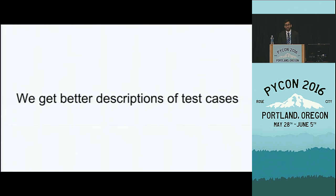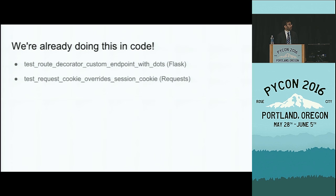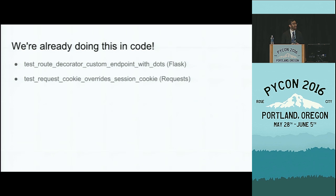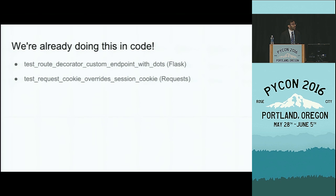Some of the advantages we have here are better descriptions of our test cases. This is something we already do — I pulled examples from Flask and the requests library — where when we have a very complicated test with a lot of steps, we try to be descriptive by having really long method names that describe every little thing about the test behavior. By using this Cucumber language, we're being a little bit more explicit about what is happening in the test.